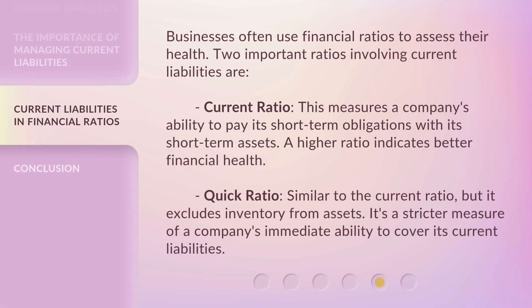Businesses often use financial ratios to assess their health. Two important ratios involving current liabilities are: the Current Ratio, which measures a company's ability to pay its short-term obligations with its short-term assets — a higher ratio indicates better financial health — and the Quick Ratio, which is similar to the current ratio but excludes inventory from assets. It's a stricter measure of a company's immediate ability to cover its current liabilities.